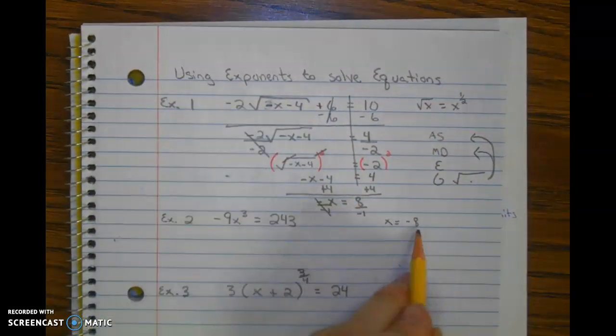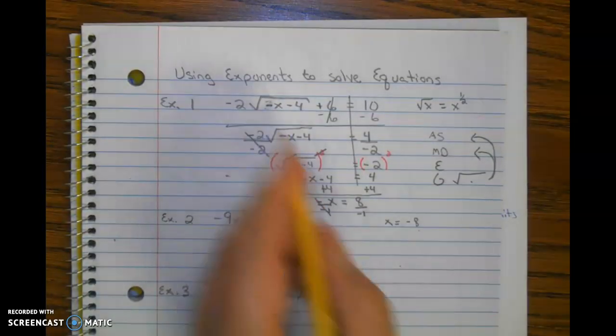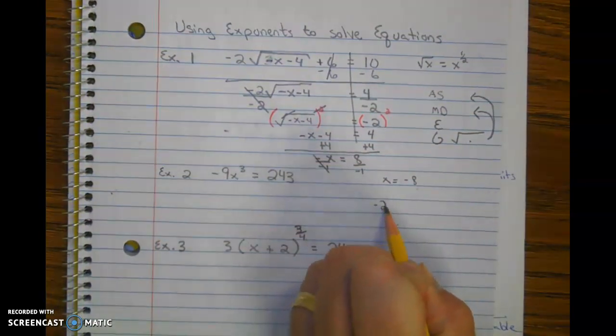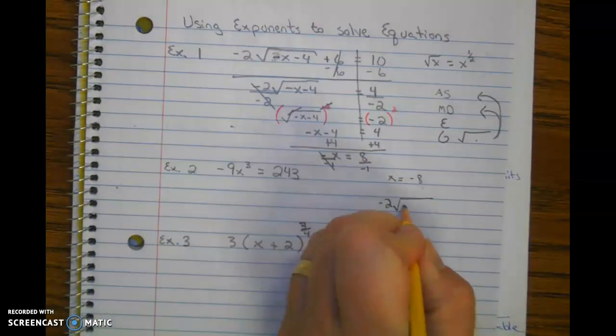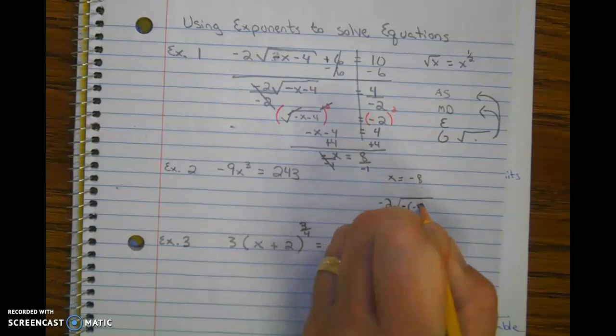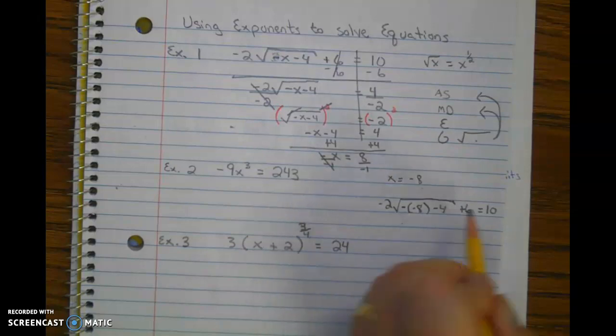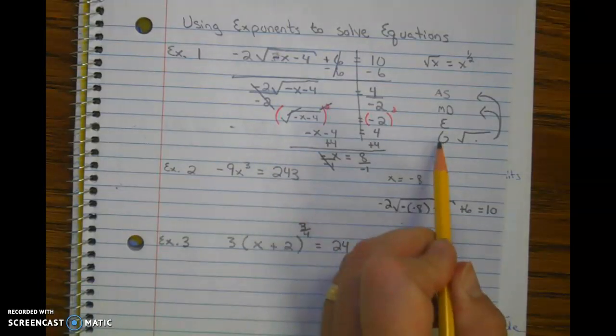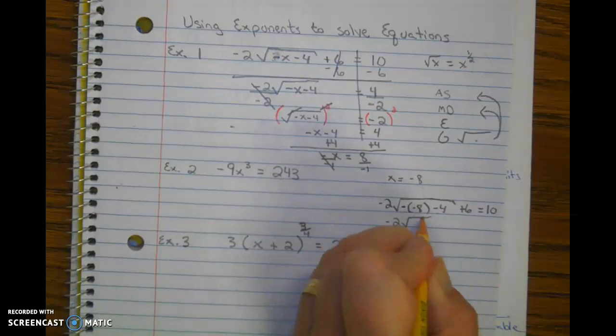Now we need to check that answer to make sure that it works. So plugging negative 8 in for x, I'm going to go ahead and substitute the negative 8 in. So we're going to have negative, negative 8. We're going to see if it works. When simplifying, we work GEMDAS forwards. So we start inside the grouping symbol. Here we get 8 minus 4, which is 4.